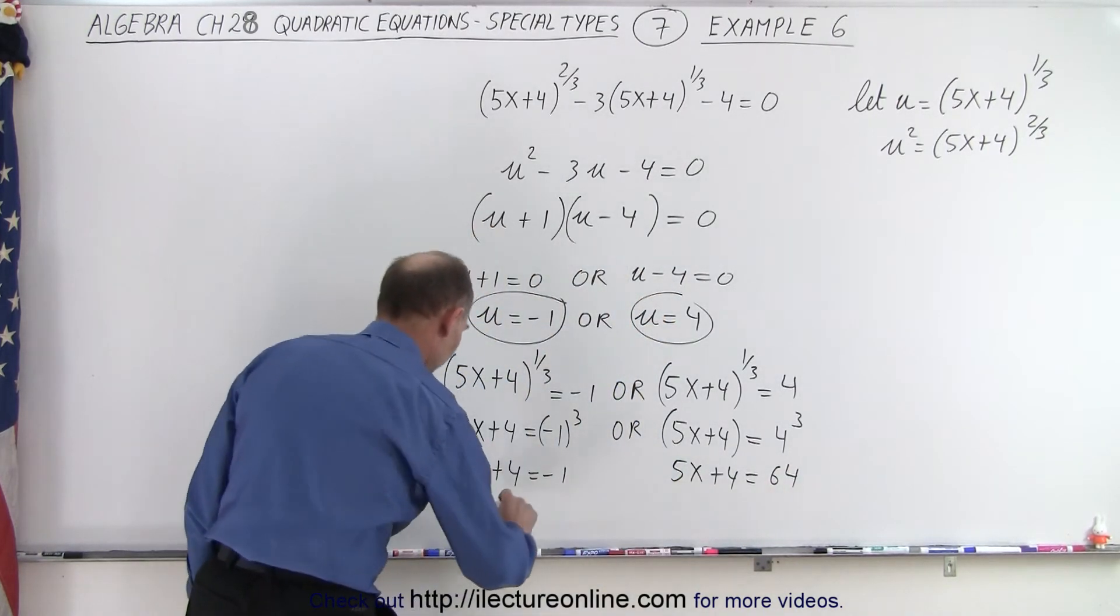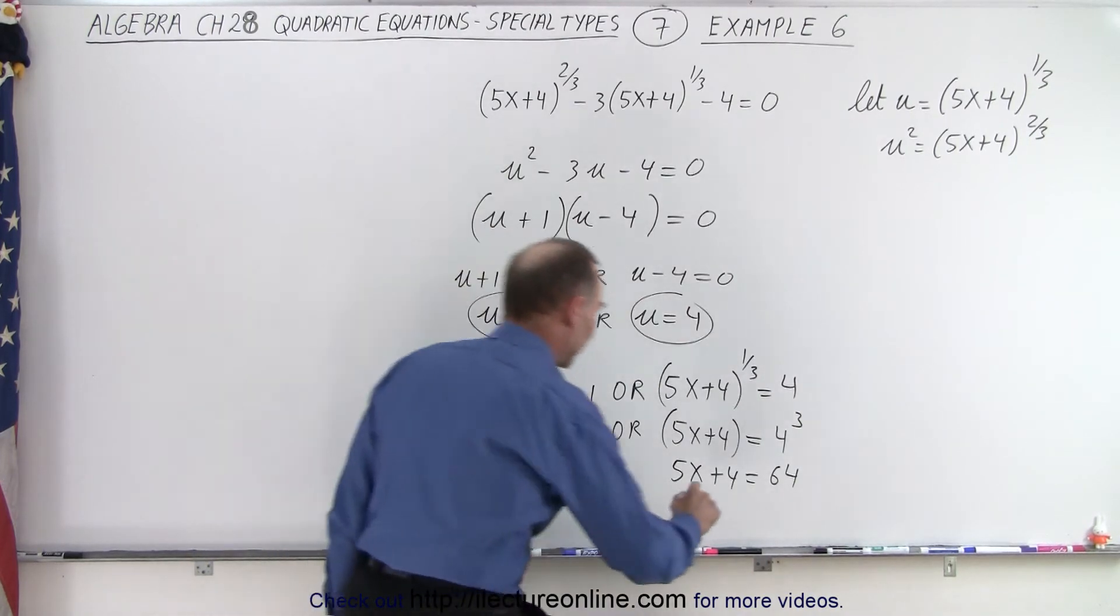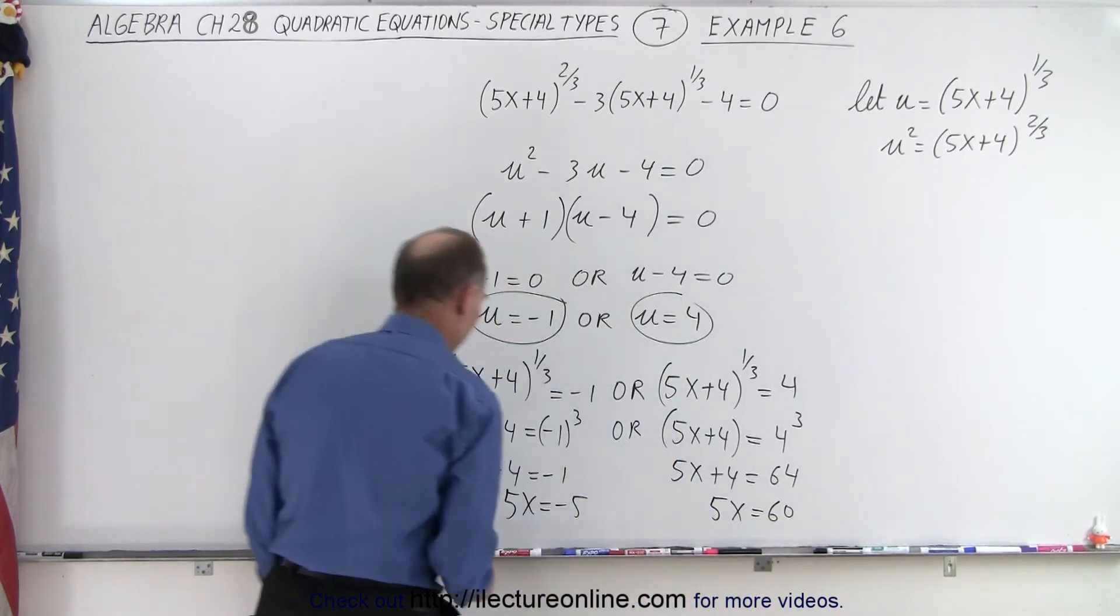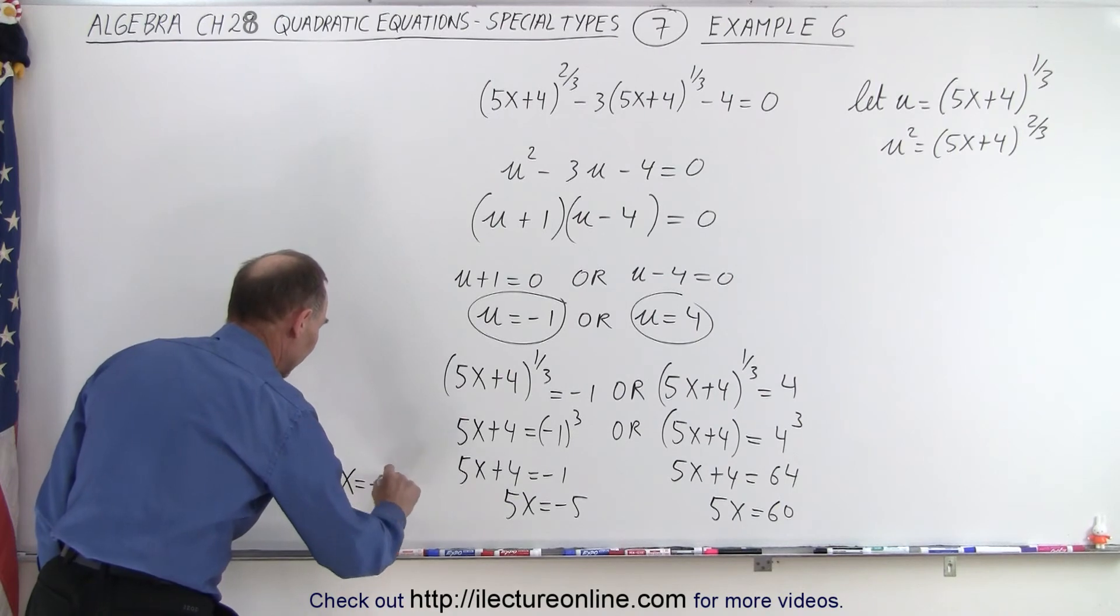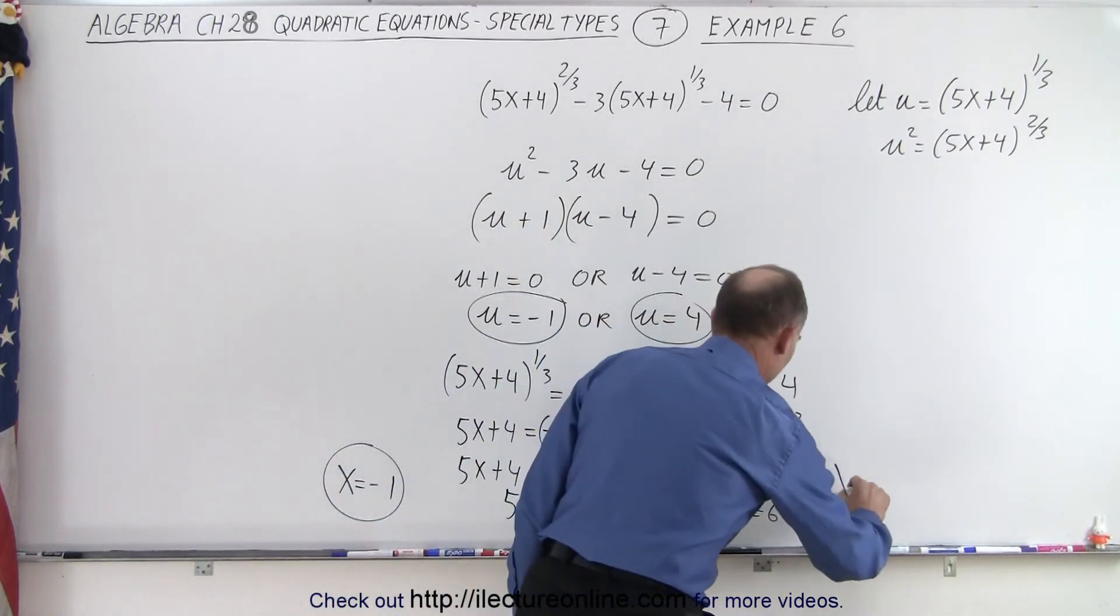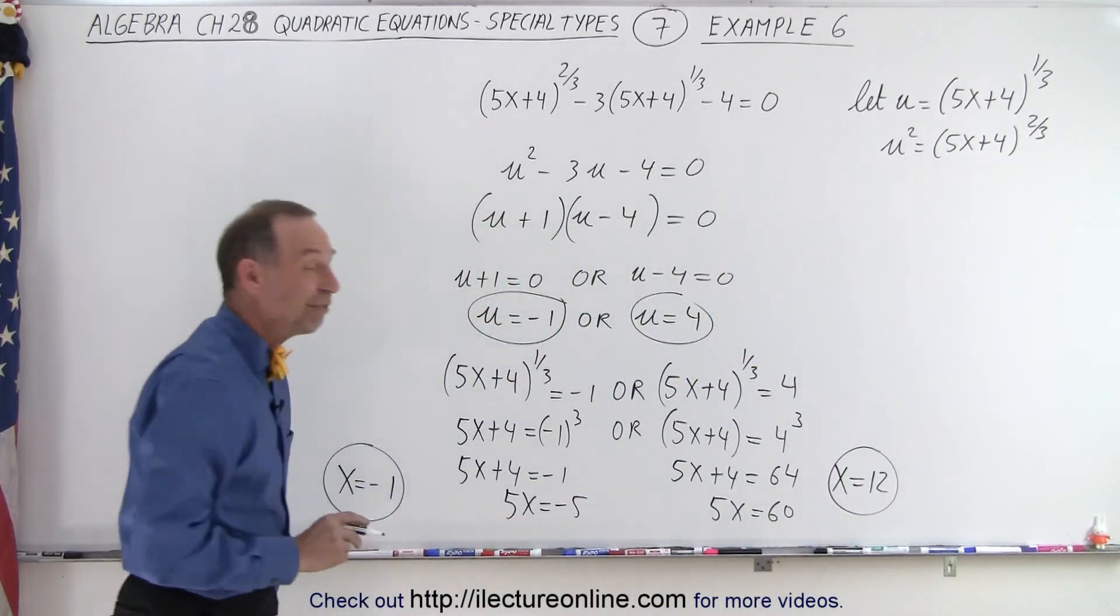Now, subtract 4 from both sides. So we get 5x is equal to negative 5. And here we get 5x is equal to 60. So here we can then say that x is equal to negative 1. We divide both sides by 5. And over here we can say that x is equal to 12 when we divide both sides by 5.